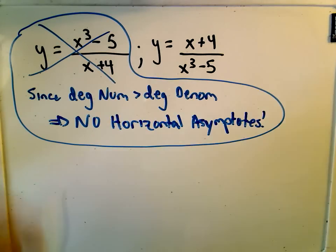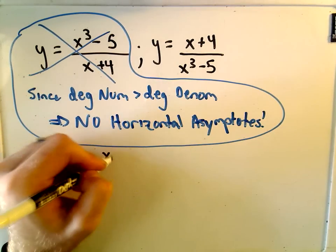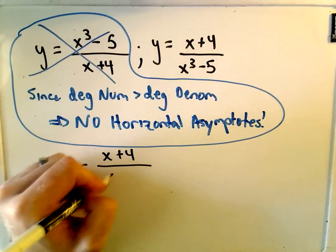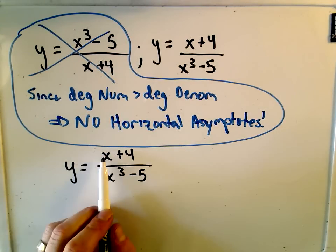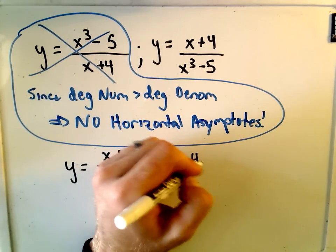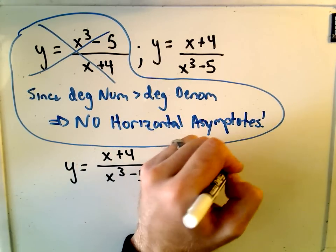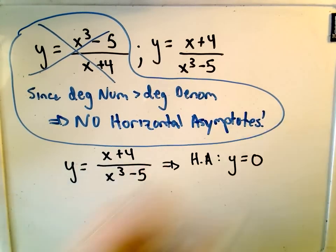If we look at our other example here, again, y equals x plus four over x cubed minus five. Well, now the degree of the denominator is larger than the degree of the numerator. So, the horizontal asymptote is going to be the line y equals zero.